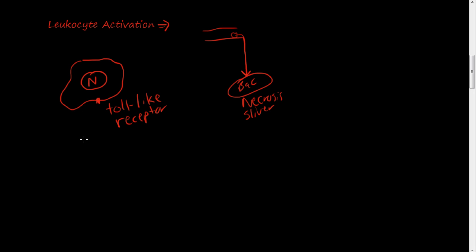This toll-like receptor is responsible for a certain type of ligand. On gram-negative bacteria, there are certain classifications of bacteria, but on gram-negative bacteria there are little molecules called endotoxins. And these receptors kind of bond, react to that. So once this toll-like receptor receives this ligand, receives this molecule and binds to it, then that activates this leukocyte.